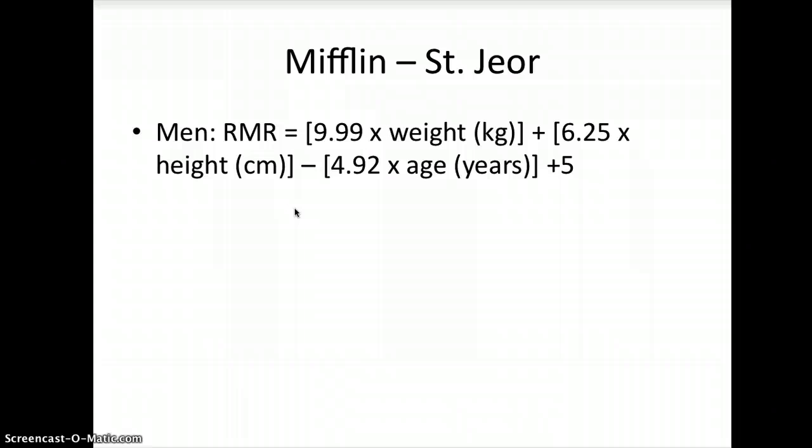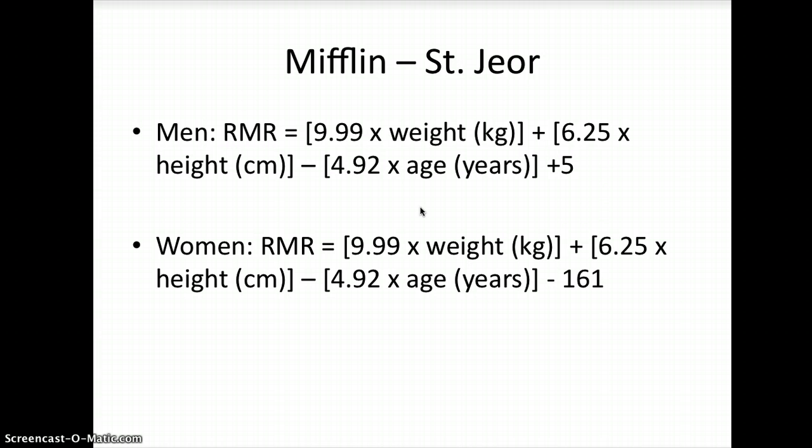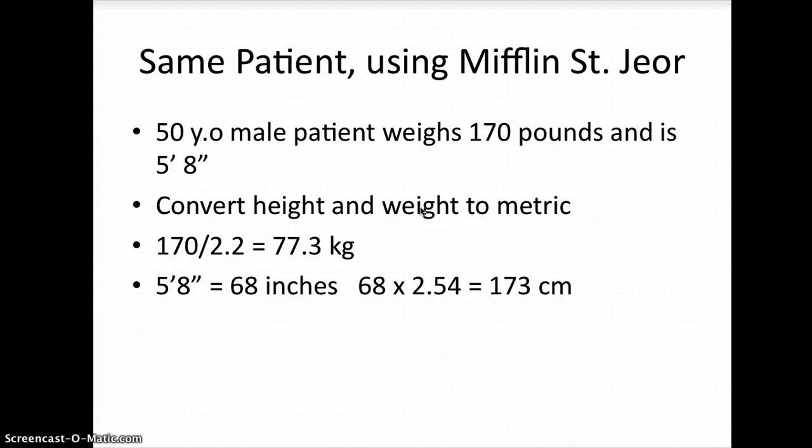Now we're going to do the Mifflin St. Jeor. It looks very similar, but if you compare to the Harris Benedict, it's just different numbers in here to multiply the weight and height and age times. So that's the one for men. This is the one for women. We're going to use the same patient so we can compare the number of calories that we got for using the Harris Benedict versus the number of calories we got versus the Mifflin St. Jeor. Just as a refresher, he is 50 years old, weighs 170 pounds, 5 foot 8 inches. We convert his height and weight to metric to get 77.3 kilograms and 173 centimeters. That should always be the first step.